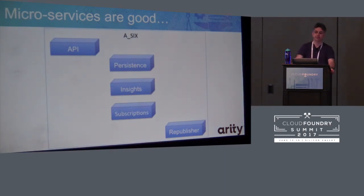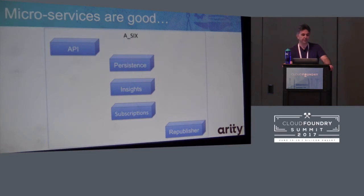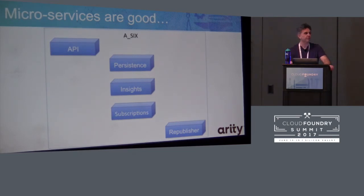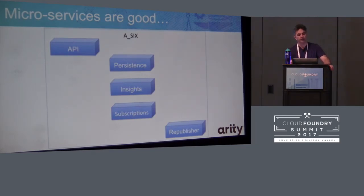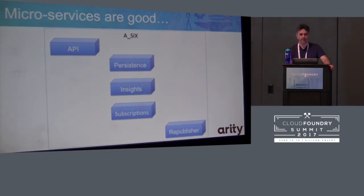Basically, we had endpoints defined at the entry point of the system — the actual API — that would dump information onto various queues. Each of the blocks in the architecture are essentially separated by queues. Where we wanted to save data to the database, the API would write onto a RabbitMQ queue. The benefit is that RabbitMQ queues are not indexed, so there's no constraint issues; they tend to perform faster than RDBMSs and you can throw a lot of data at them.